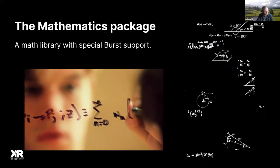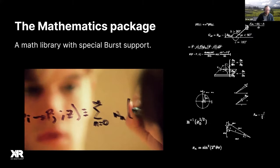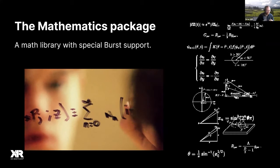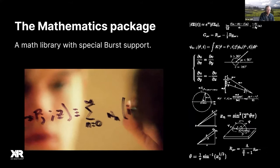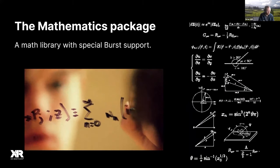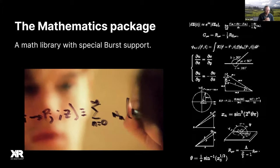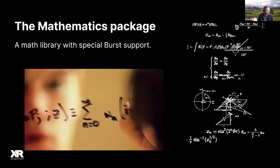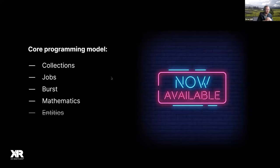The Mathematics package is simply a mathematics library, but what's special is that it has hooks into Burst. When a Mathematics function is compiled by Burst, it has hints telling it which CPU instruction is optimal for that particular math operation, since Burst can't always figure that out for special math operations. You use it like any other math library. These first four packages are production ready — Collections is imminently going to be released out of preview.